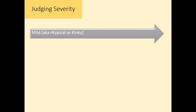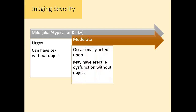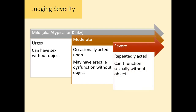How do we know how severe a person's paraphilia is? In the mild category — where someone likes certain things but can function without them — we would call that atypical or kinky behavior. They may want to pursue certain behaviors or situations, but they can have sex without the object and can go years without even thinking about it. In the moderate category, a person has occasionally acted on their impulses and might have erectile dysfunction if the object's not present, but it's not guaranteed. In the severe case, they have acted on these impulses a lot and really can't function sexually without their object.